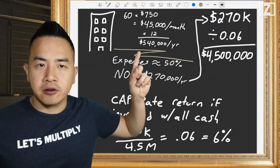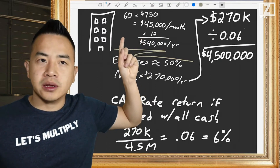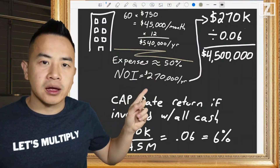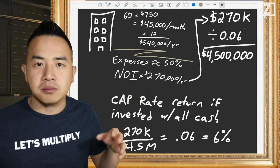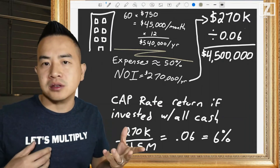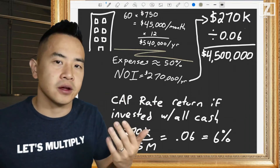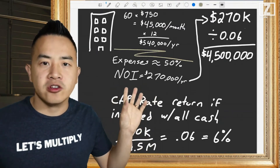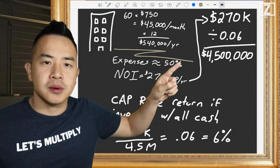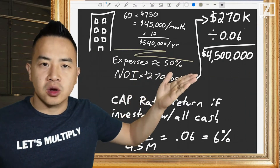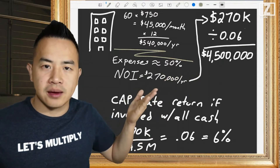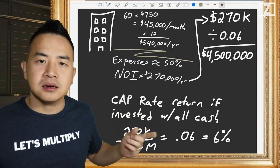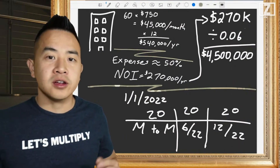When you do your analysis, you'll figure out the income because you'll know how many units there are and the current rents. Then you subtract expenses as best you can — some things you can calculate, some fluctuate like utility bills. You come up with an NOI, divide by a cap rate, and arrive at a price. Then you negotiate with the seller to see if they'll sell for that price. That's generally how it's done.